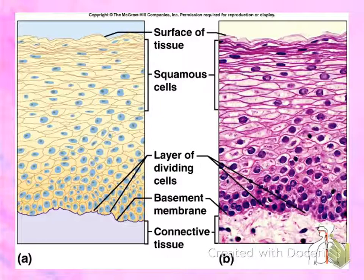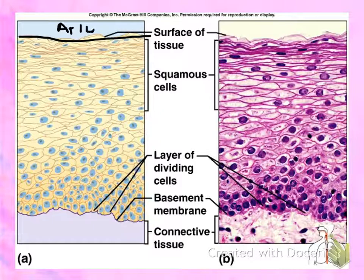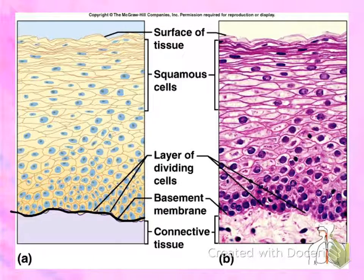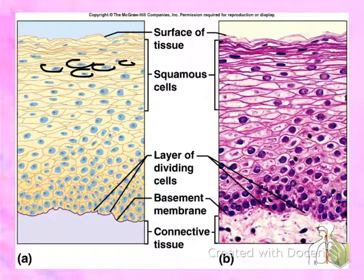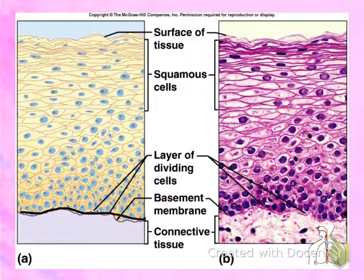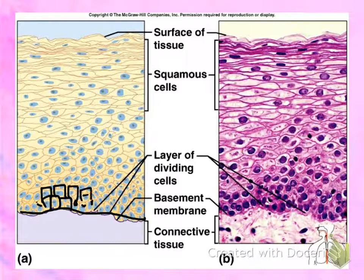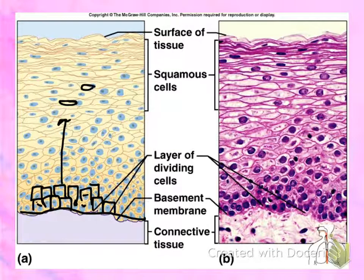This is stratified squamous epithelium. Note the apical surface that is not attached to anything, and the bottom portion attached to the connective tissue underneath — that's called the basement membrane. Note the multiple layers of cells, and notice toward the apical surface the cells are flat with flat nuclei — this is why it's called stratified squamous. Cells toward the basement membrane are cuboidal in shape with round nuclei, and this is where cells are continuously growing. Cells near the basement membrane are newer, and as they move toward the top they become flatter, older, and eventually dead and sloughed off.